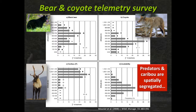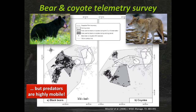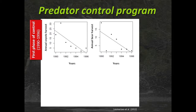What could limit the efficiency of the predator control program? A grad student, using GPS telemetry for bears and coyotes, found that predators and caribou are spatially segregated — predators mostly in the valleys, caribou at the summits. However, caribou can be visited by bears and coyotes because those animals are highly mobile. Even if they are outside the Gaspésie National Park, they can make a short migration toward the summits during the window of vulnerability for calves, potentially jeopardizing calf survival.